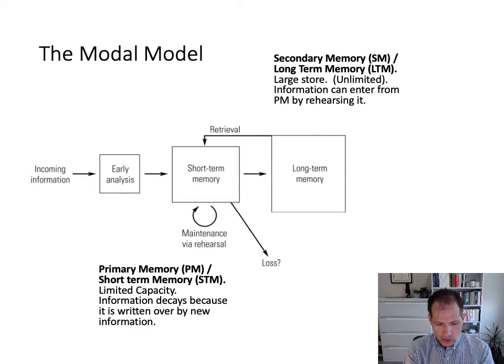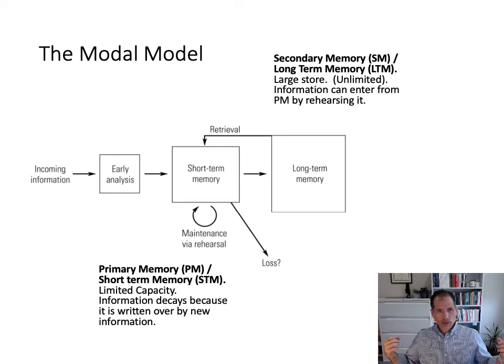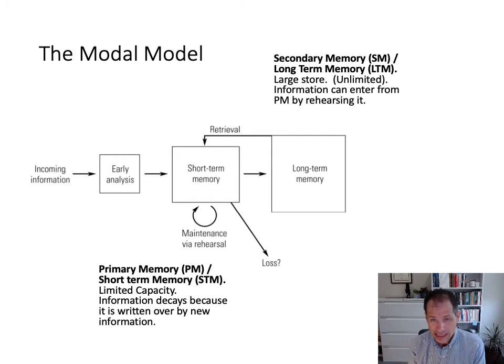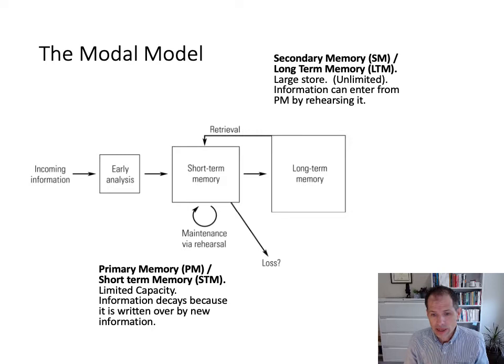One of the original models of memory, popular in the late 1960s and into the 1970s, is Atkinson and Shiffrin's modal model. It suggested there are two primary memory stores. We call one primary memory or short-term memory — this has a limited capacity where you can rehearse things. If you don't rehearse them, they fade. Information decays because it's written over by new information, so if you hear new words coming in, what's in short-term memory disappears. You can maintain it using an inner voice, but it only holds about seven plus or minus two pieces of information.